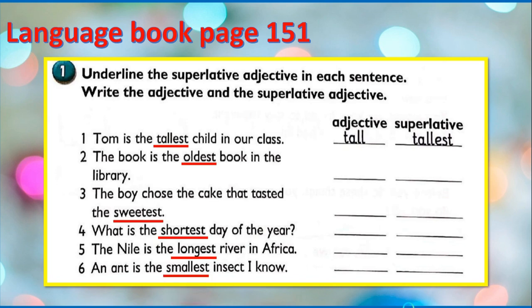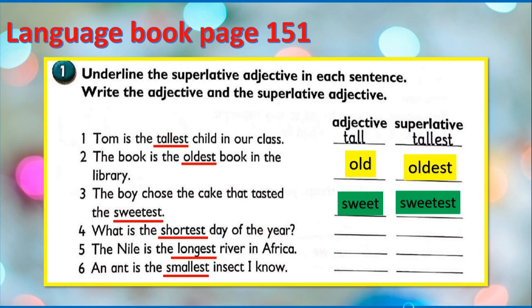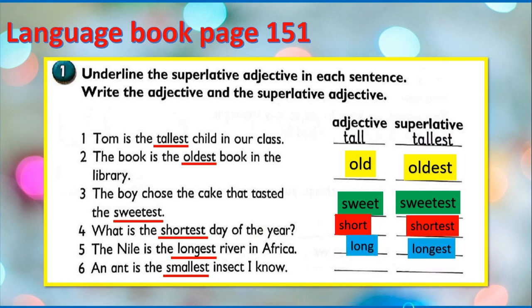Now write the adjective and its superlative form. Number one is already given: tall and tallest. Number two: old, oldest. Number three: sweet, sweetest. Number four: short, shortest. Number five: long, longest. Number six: small, smallest.